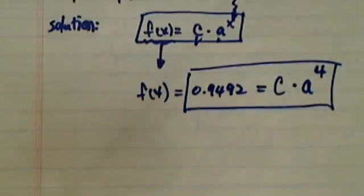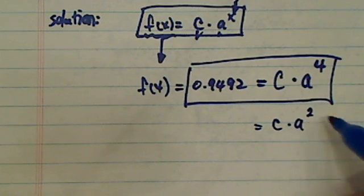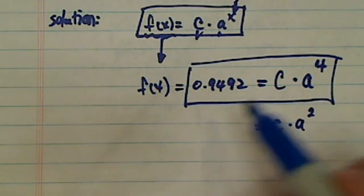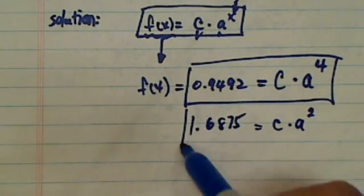Second equation I'm going to do the same thing. Now this time I'm going to do x equal to 2. And this one is equal to 1.6875, so here's my second equation.